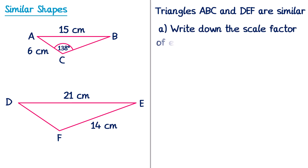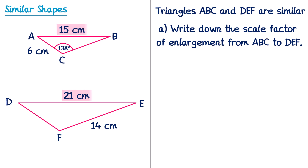The first question asks for the scale factor of enlargement from ABC to DEF. Looking for matching sides, I can see the 15 on ABC and 21 on DEF on the top. Since 21 is not in the 15 times table, I do 21 divided by 15, which gives 1.4. So the scale factor is 1.4.